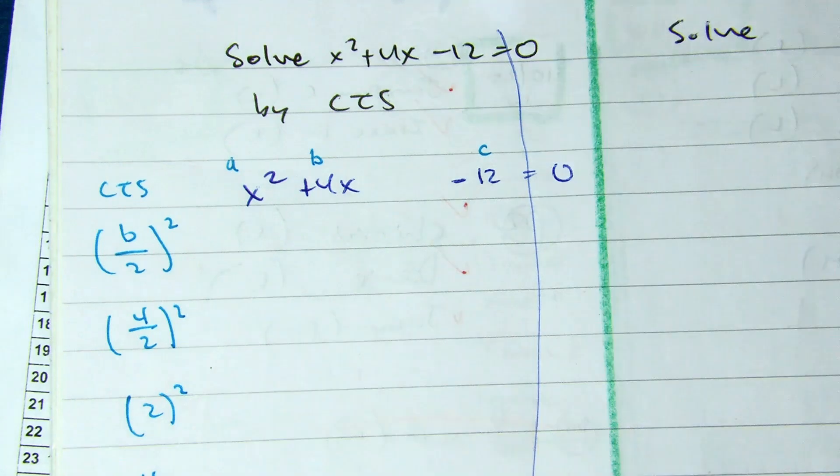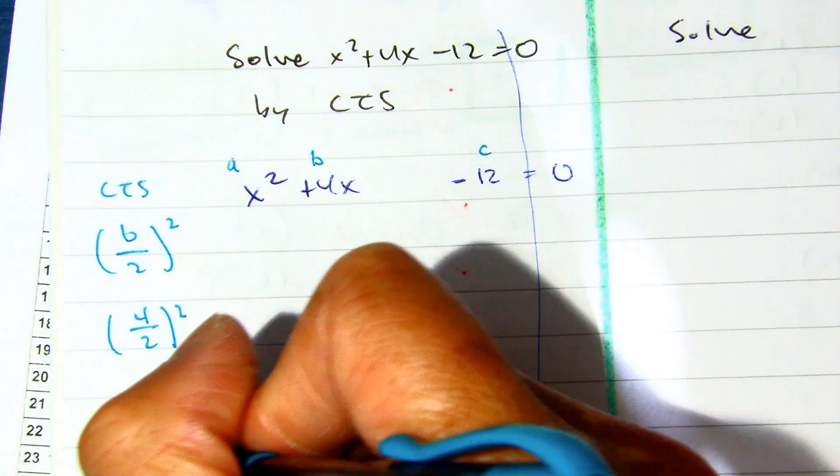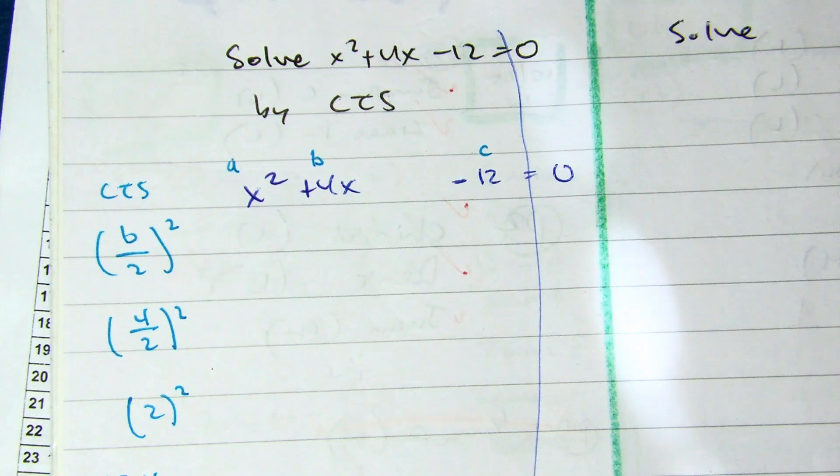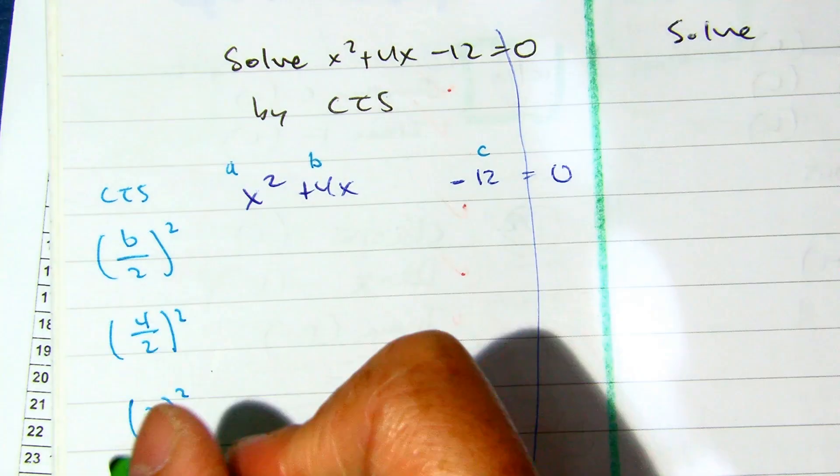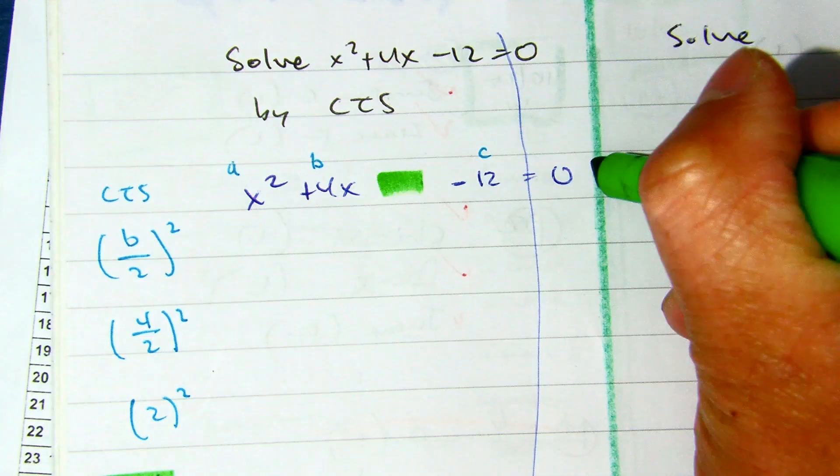To complete the square, or in your packets you were doing c = 4, so I'm going to put the 4 here and here.